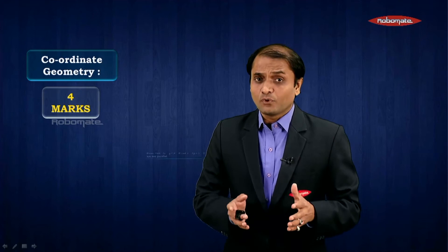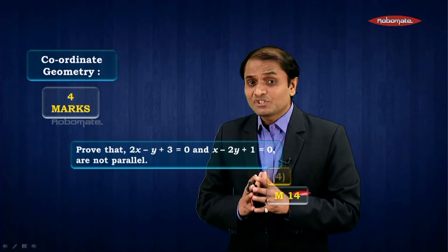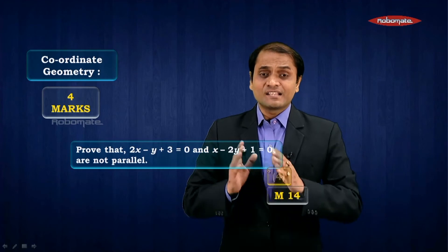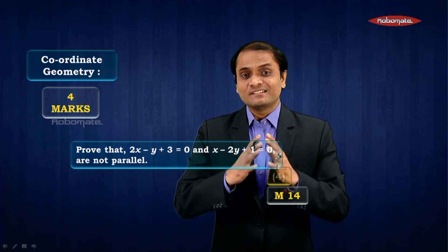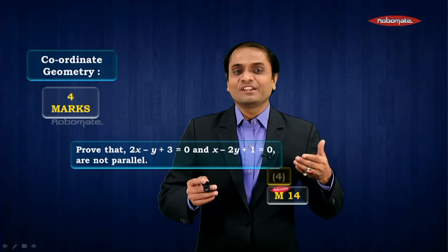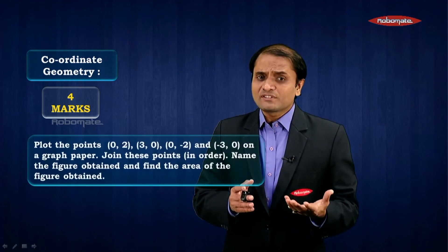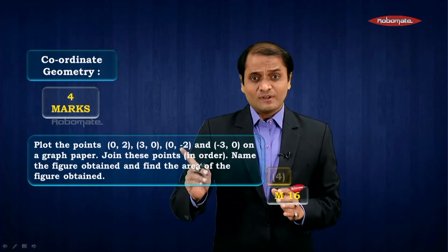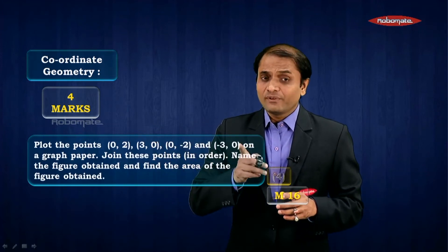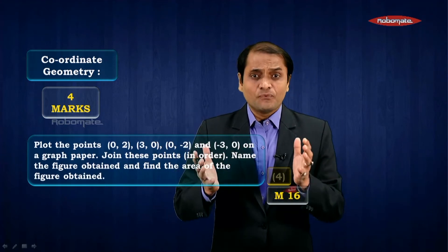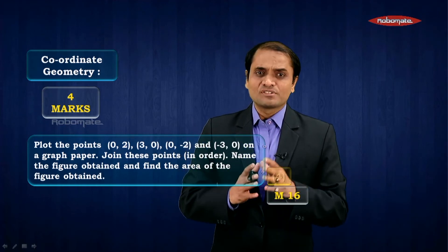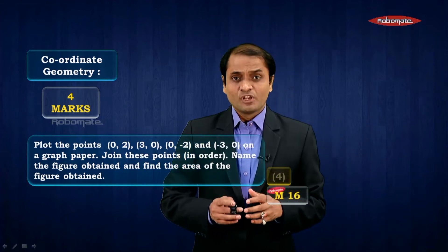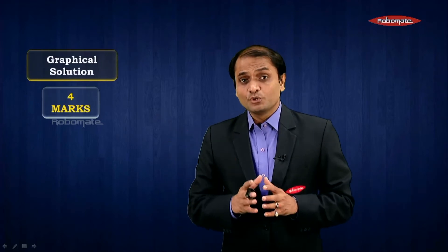Let us see from coordinate geometry what are the different types of questions they could ask for four marks. In this question, they say prove that these two lines are not parallel. This has to be done on a graph paper — you have to plot the graphs of these two equations and show that the lines are intersecting. Since this is a graph-based question, they could ask it for four marks. There is also a small possibility of a question where you plot given points, join them to form a figure, name the type of figure, and find its area.